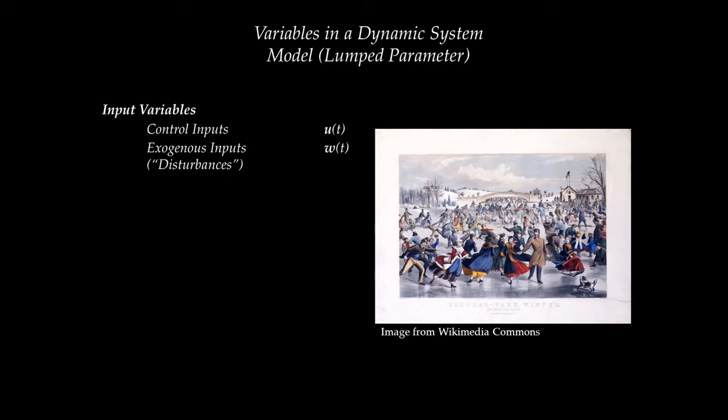For example, a wind gust is an exogenous input. If you're ice skating and somebody gives you a push, that push is an exogenous input. So we now distinguish between control inputs u(t), which we as control engineers have the power to dictate, and exogenous inputs w(t), which somebody else dictates and which we cannot control.